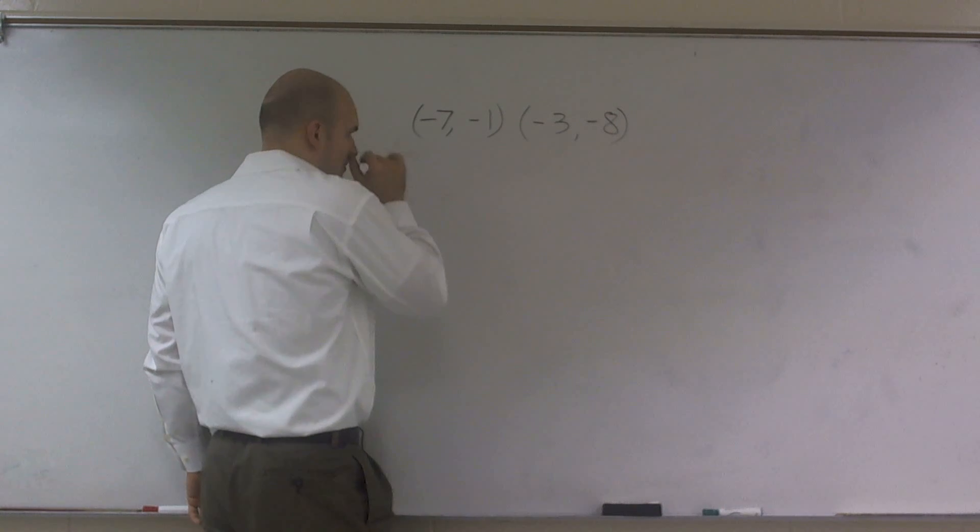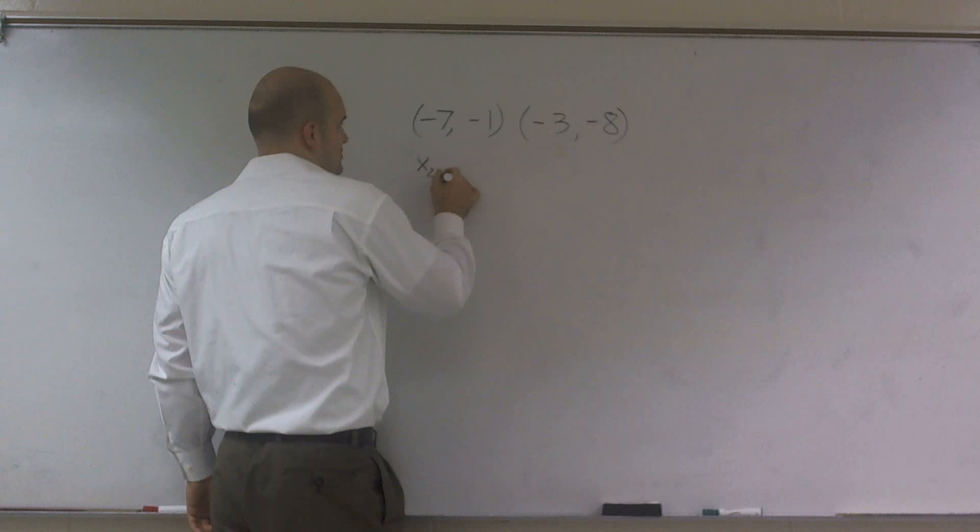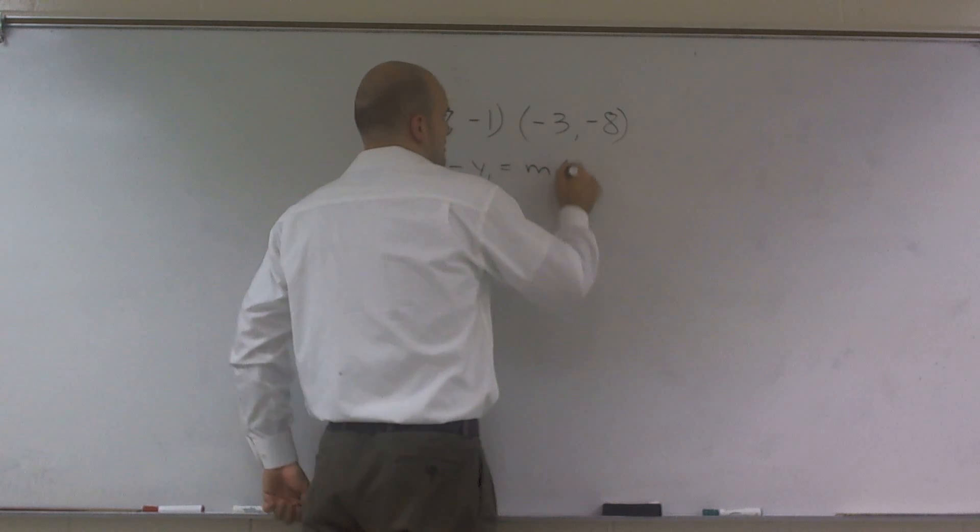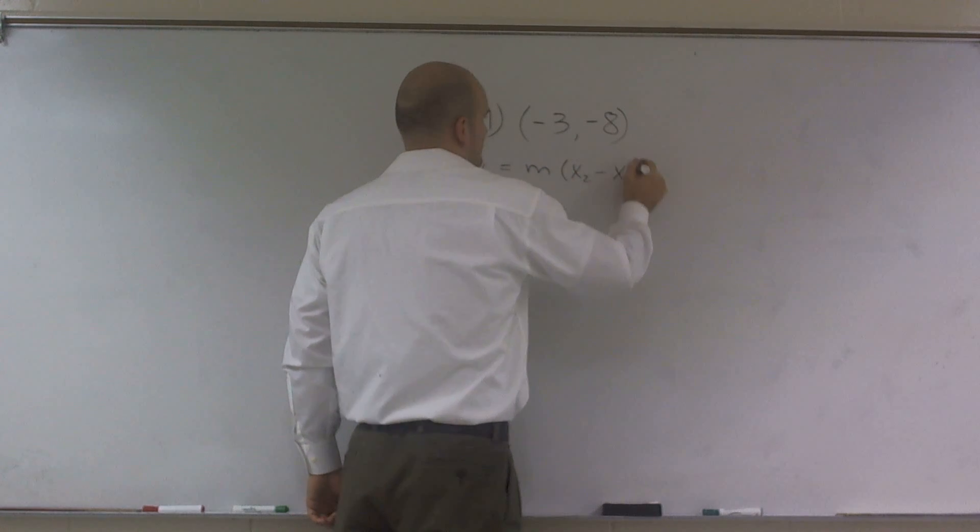So if you don't remember point slope form, point slope form is this: y2 minus y1 equals m times x2 minus x1. All right?